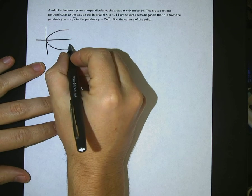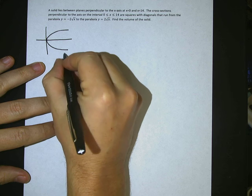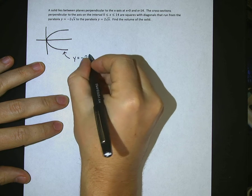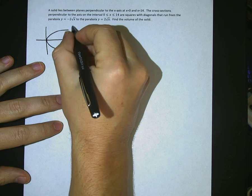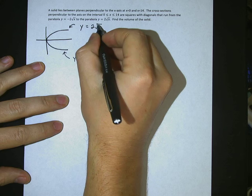So first of all, the lower portion of this sideways parabola we have here, this is the function y equals negative 2 square root of x. And this upper part is y equals 2 square root of x.